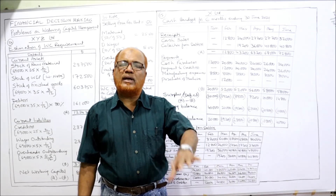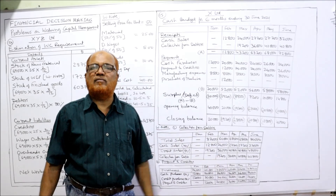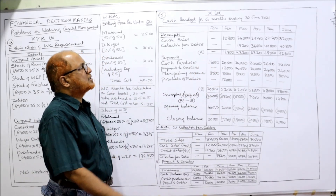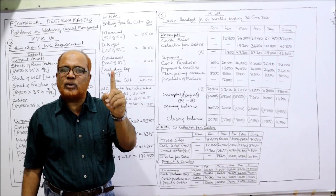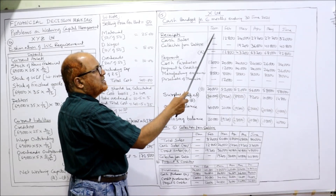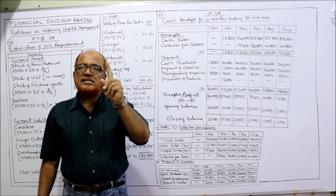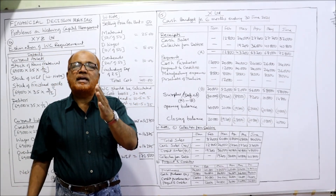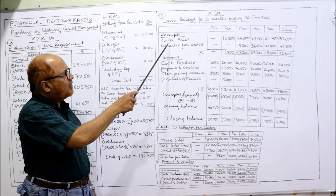In the working note we calculate collection from debtors and payment to creditors. The format of the cash budget: X Limited, cash budget for 6 months ending 30th June 2021, with six columns for January through June. The details column has three sections: receipts, payments, and closing balance. Receipts include cash sales and collection from debtors. Payments include cash purchases, payment to creditors, manufacturing expenses, and purchase of machine.